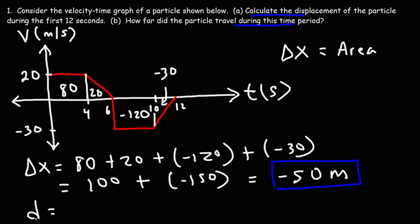To calculate the distance, it's very similar to calculating the displacement. You need to get the area under the curve. The only difference is distance is always positive. So what we're going to do is all of the negative values that we have for area, we're going to make them positive.